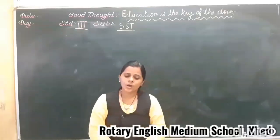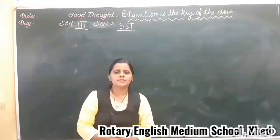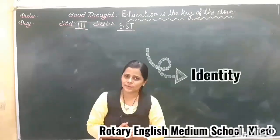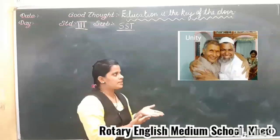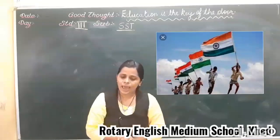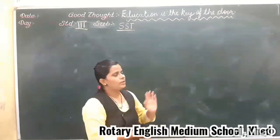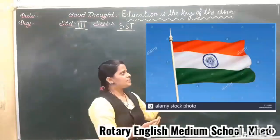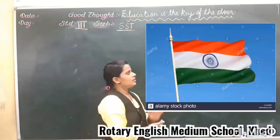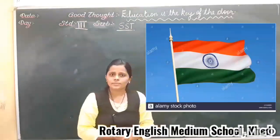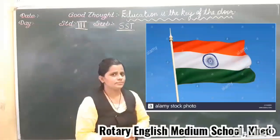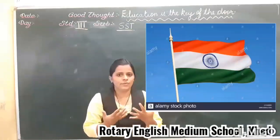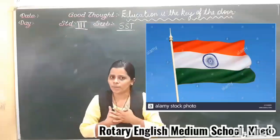Understood my dear children? Now every country has some symbols that tell us about identity and values — values like unity, patriotism, brotherhood — and the culture of the country. When you see this picture, what you imagine, what comes to mind? That this is the flag of my country. You feel very proud — yes, this is the flag of my country.